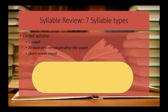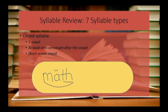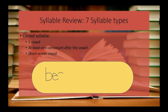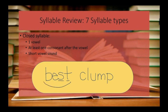Another word that has a closed syllable would be a word like math. We can have a digraph following the sound or a blend following the sound and it still counts as a closed syllable — the vowel is still short and it is still closed. Consider how you would mark the word best or clump. Although you have a blend, you are still going to mark it as a closed syllable.